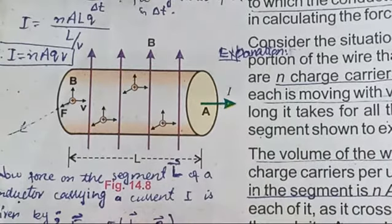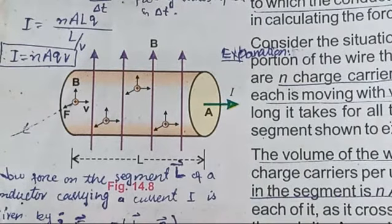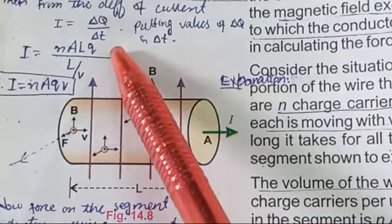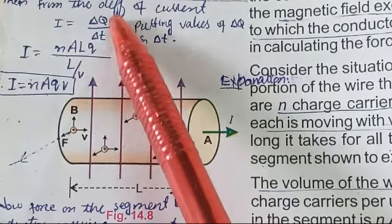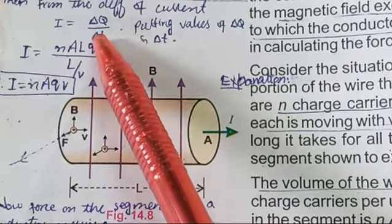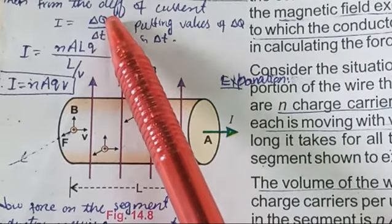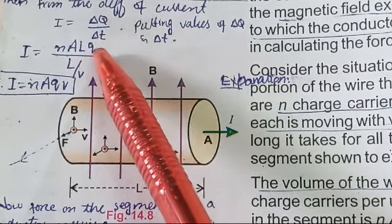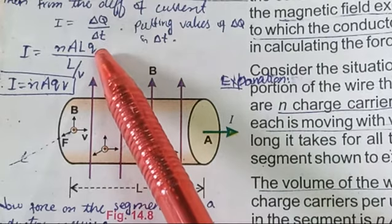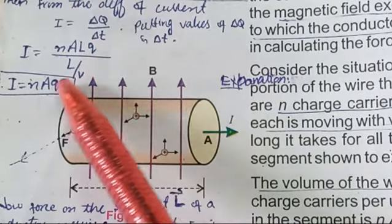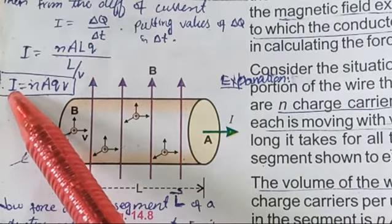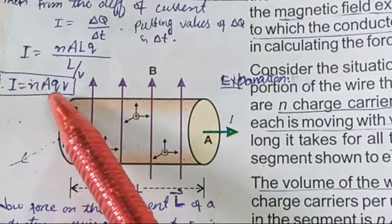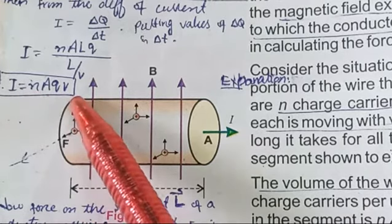We defined current as I = ΔQ/ΔT, and substituted the values: ΔQ = N·A·L·Q and ΔT = L/V. The final calculated value of current is I = N·A·Q·V.